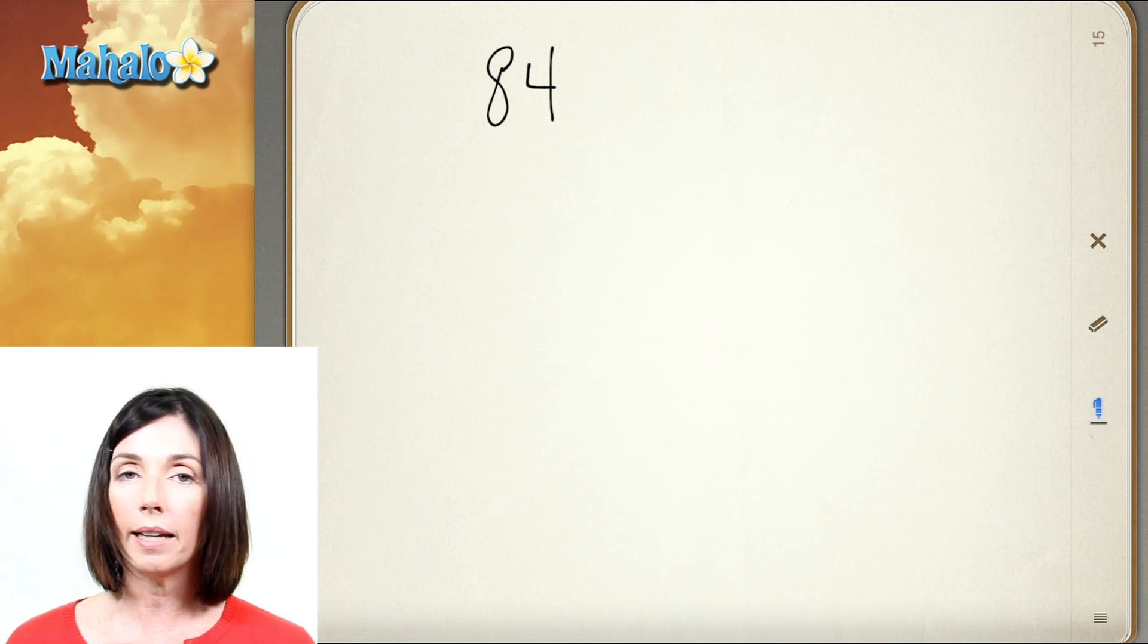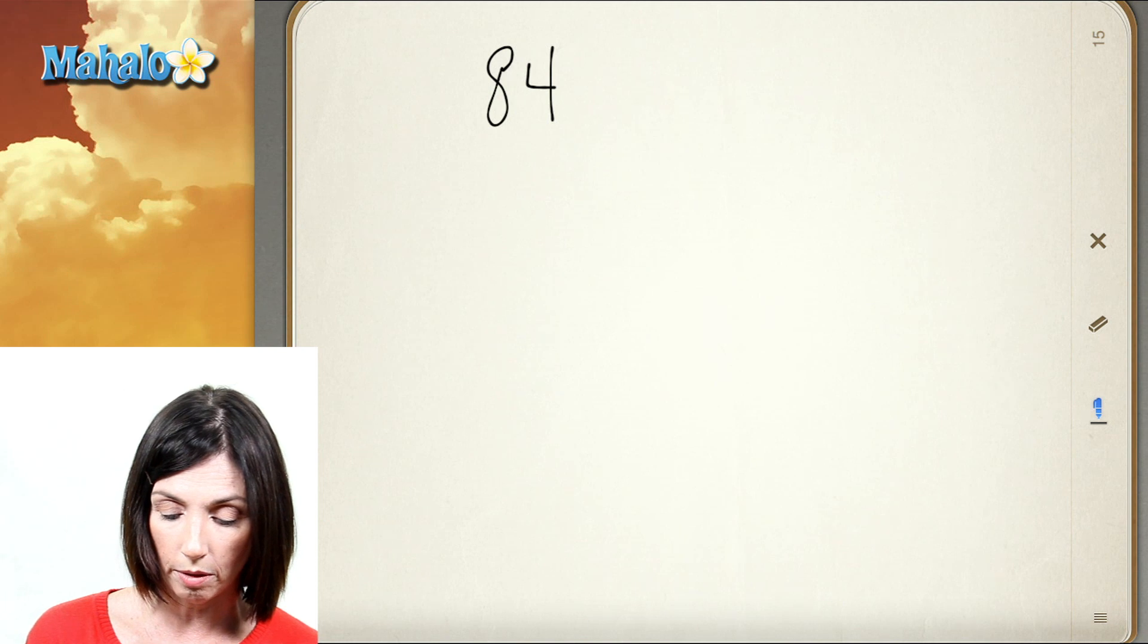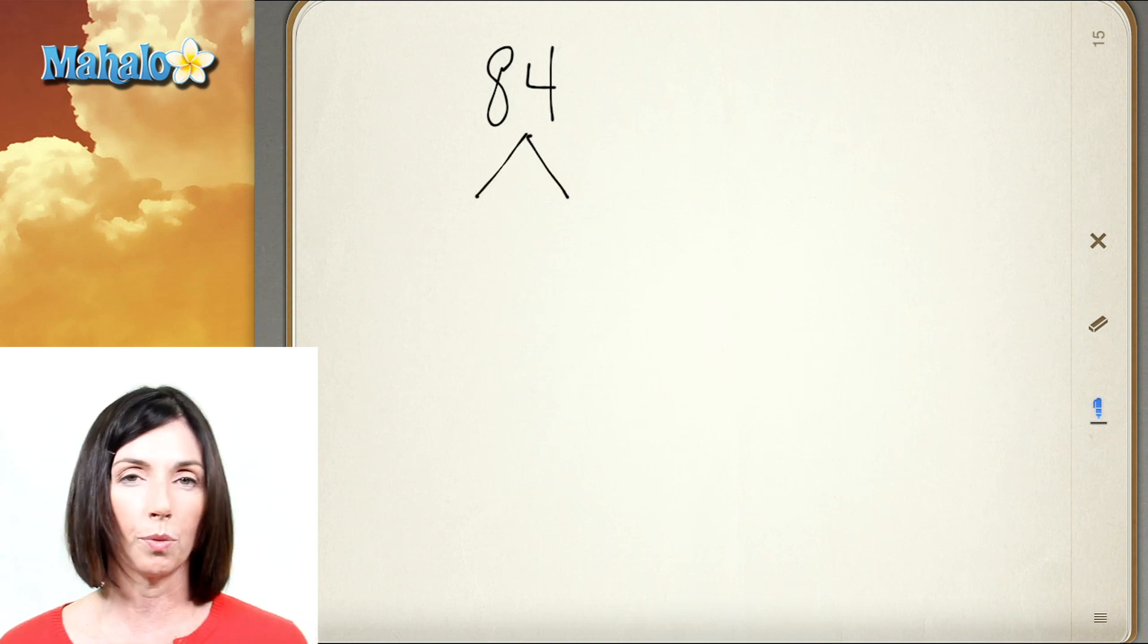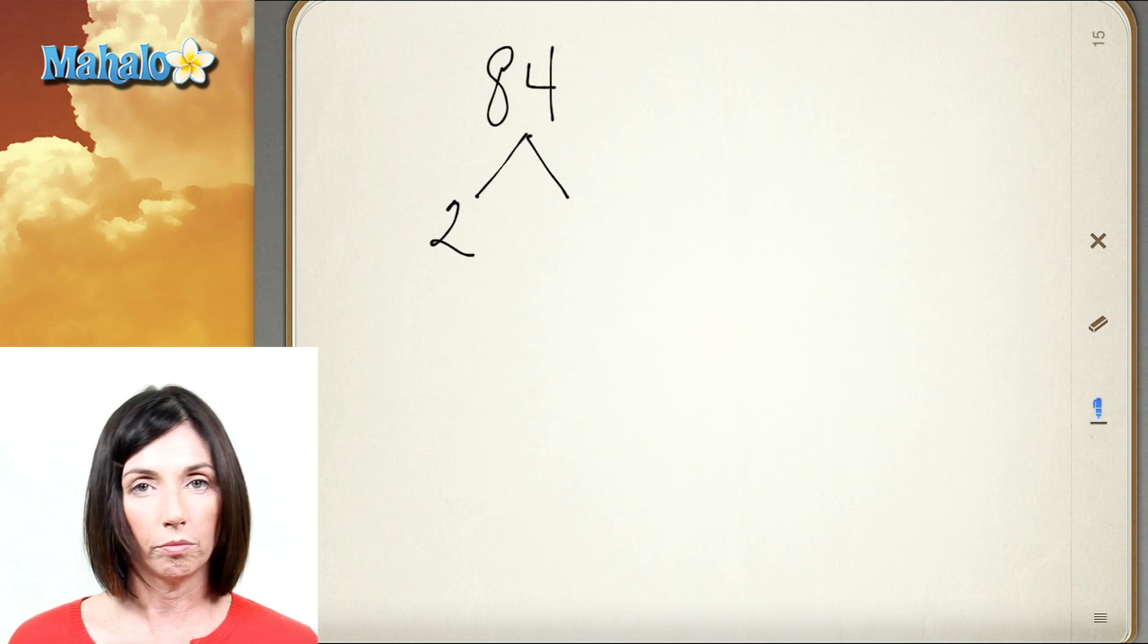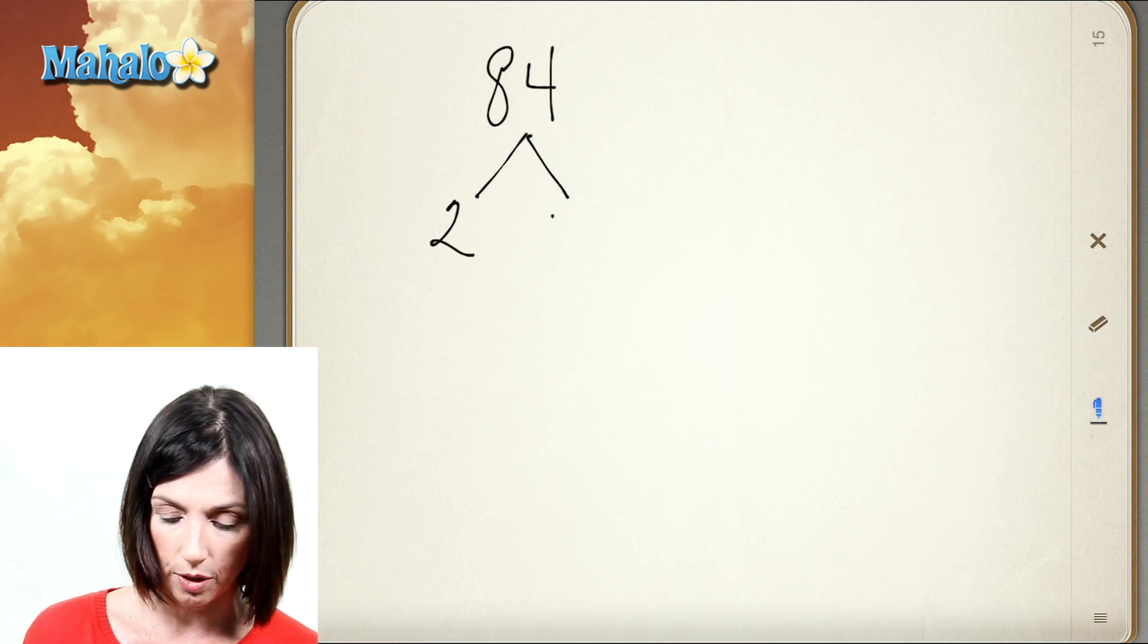So 84, well I know 84 is an even number so I know 2 will go into it. So you do prime factorization with this tree, and I know 2 is a factor of it. And 2 goes into 84, divides it in half, so that gives us 42.